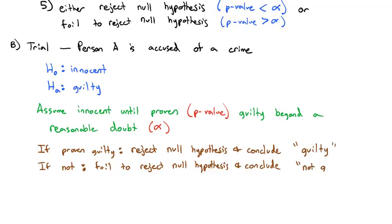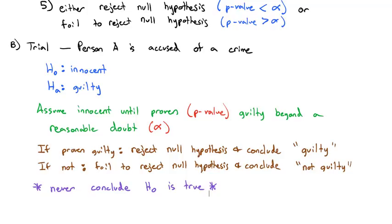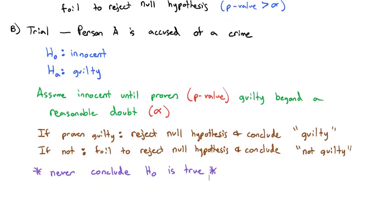We conclude that they are not guilty. The conclusion focuses on the alternative hypothesis. What's key is that we never conclude the null hypothesis is true — we just failed to conclude the alternative. We didn't say they were innocent; we just said there's not enough evidence to say they're guilty. That's an important conclusion that applies to statistical conclusions as well. We will never conclude the null hypothesis is true; we will always conclude that the alternative hypothesis could or could not be proven.